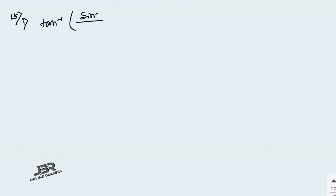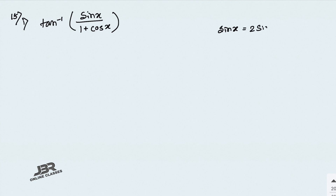Hello everyone. In this video I'm going to start from sum number 15 from Exercise 2.2. For the previous part, please check the description box — the link will be there. Sum number 15, problem 1: tan inverse of sin x divided by 1 plus cos x. You have to simplify this. We know that sin x equals 2 sin(x/2) cos(x/2).